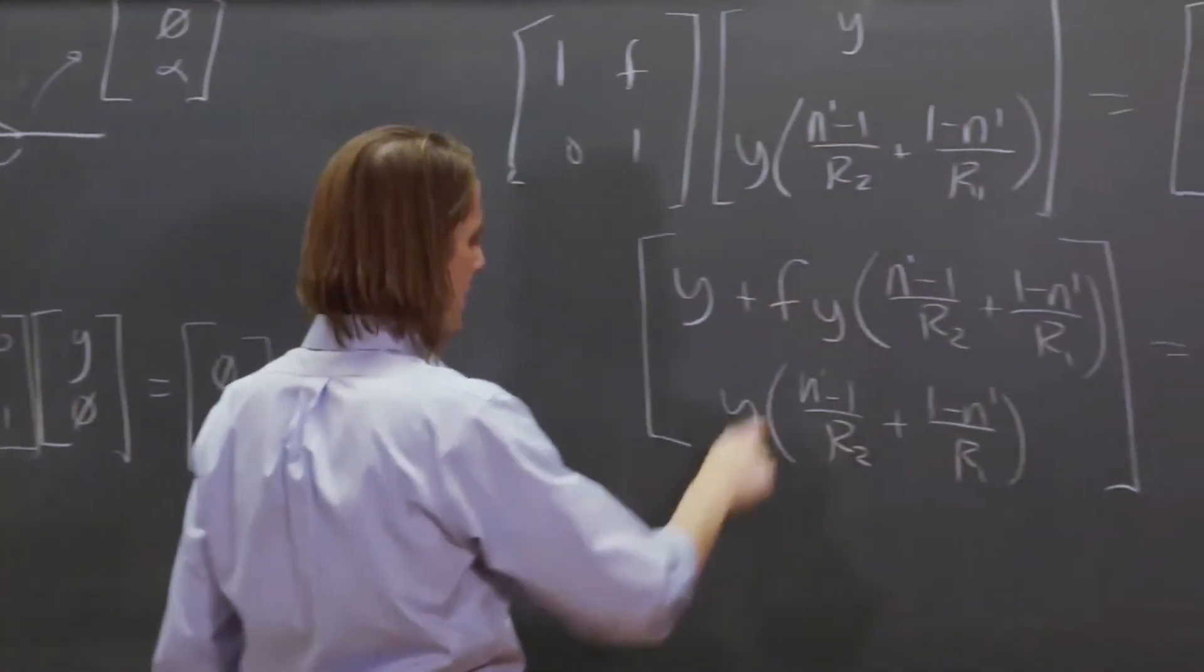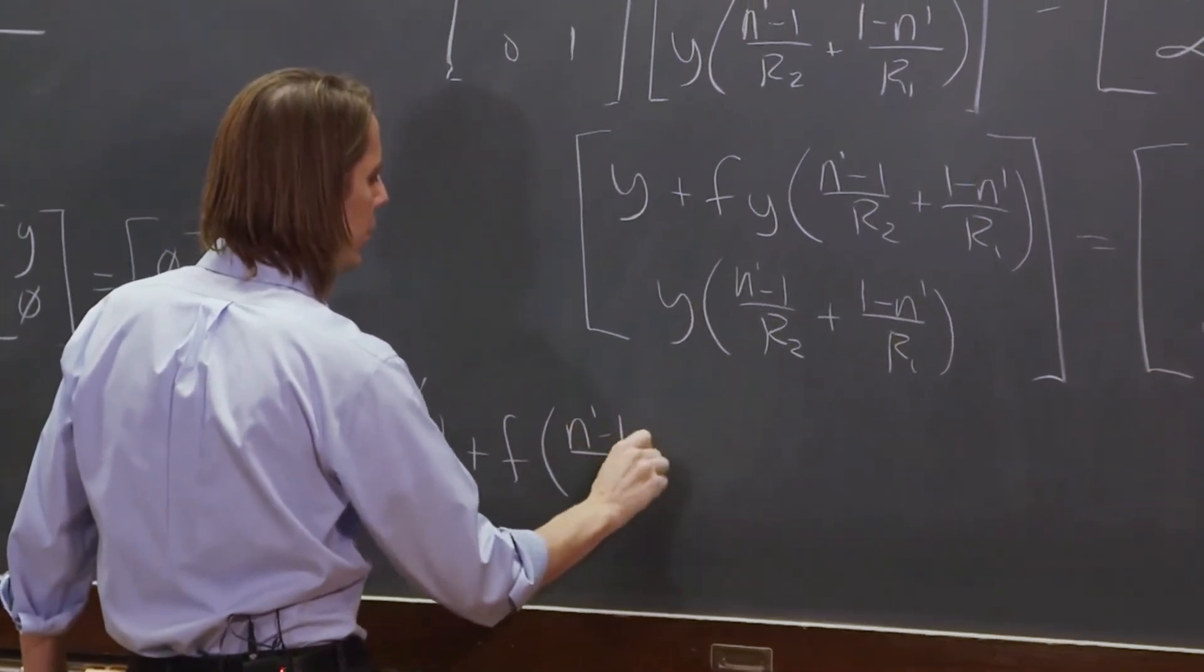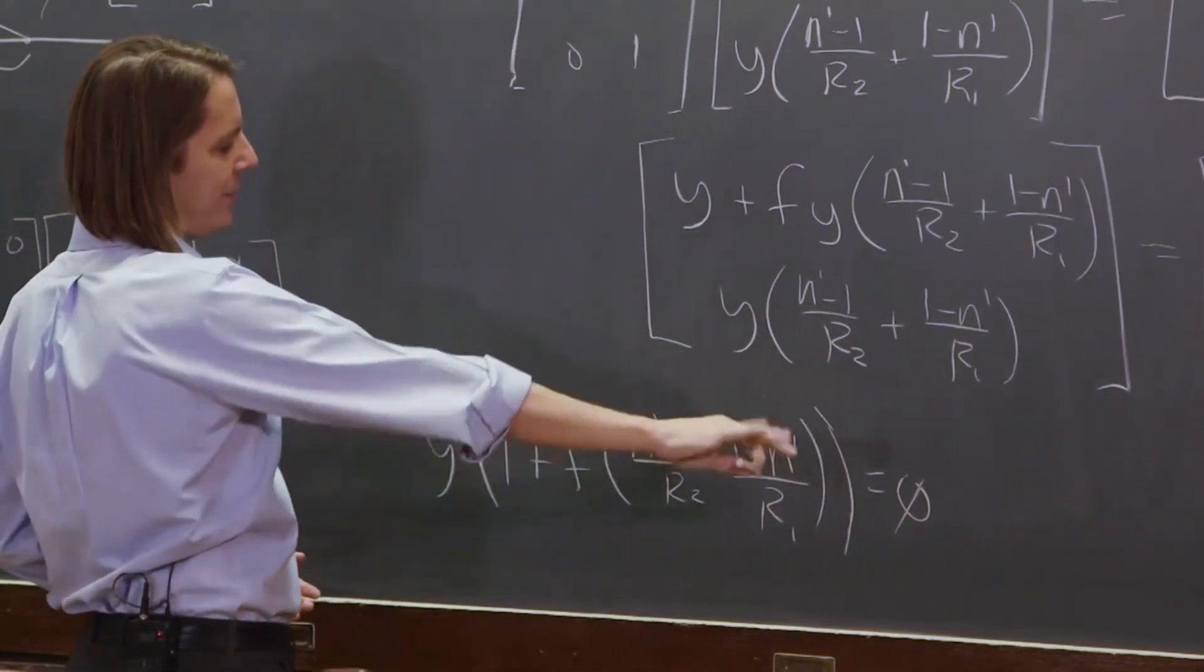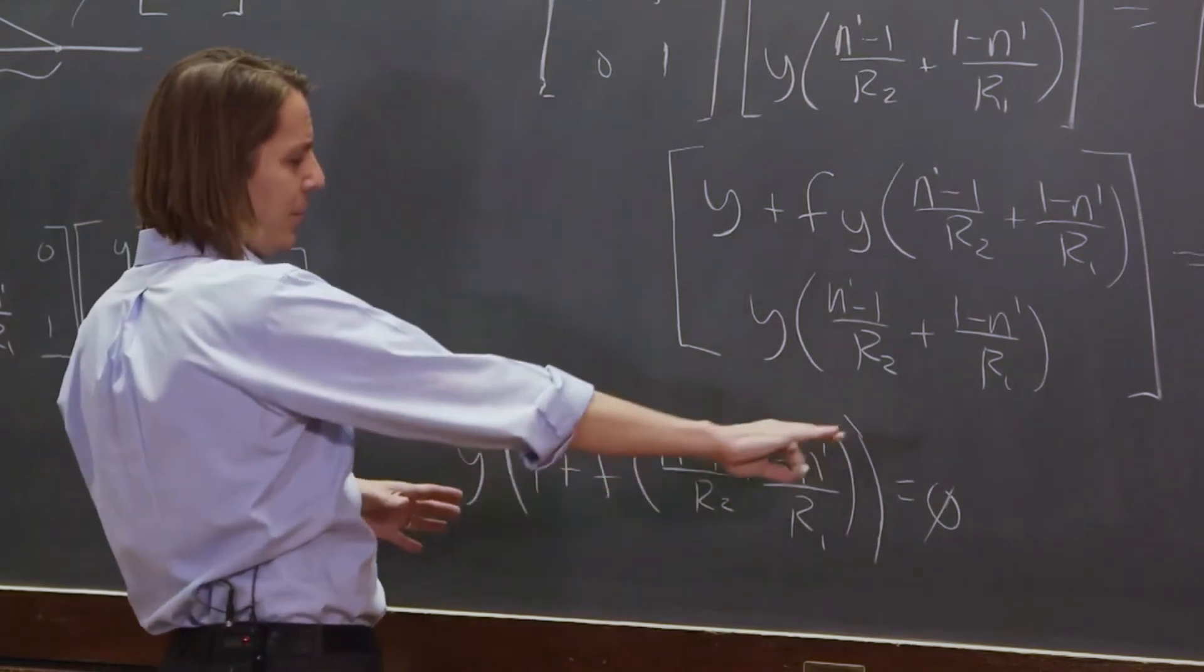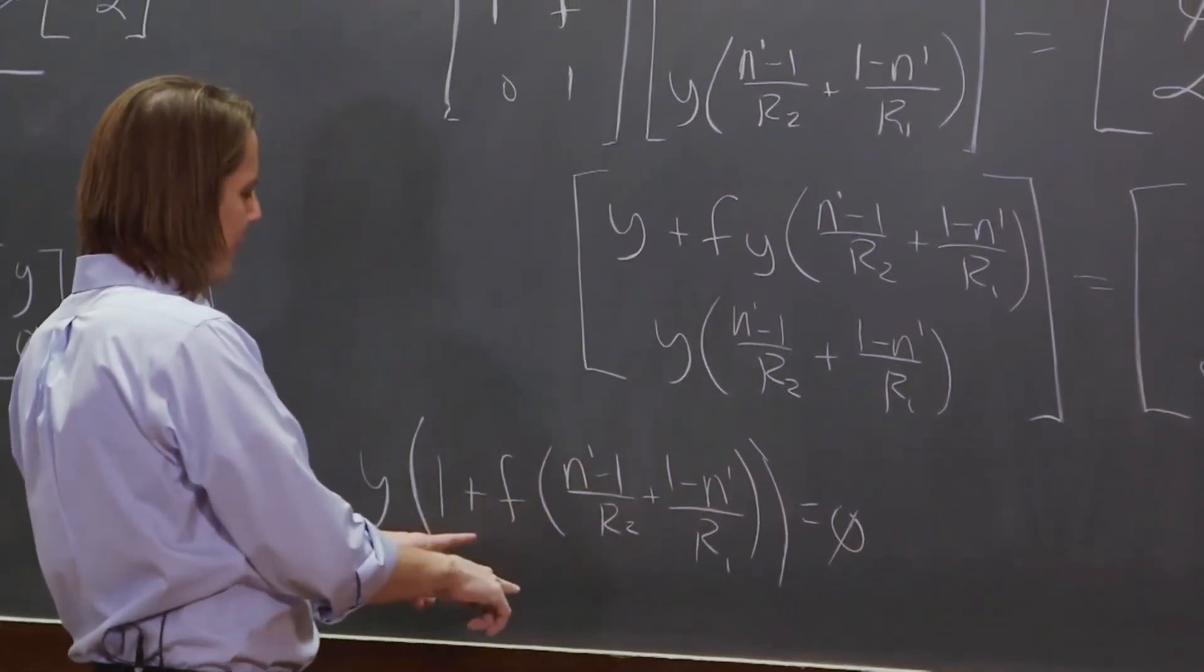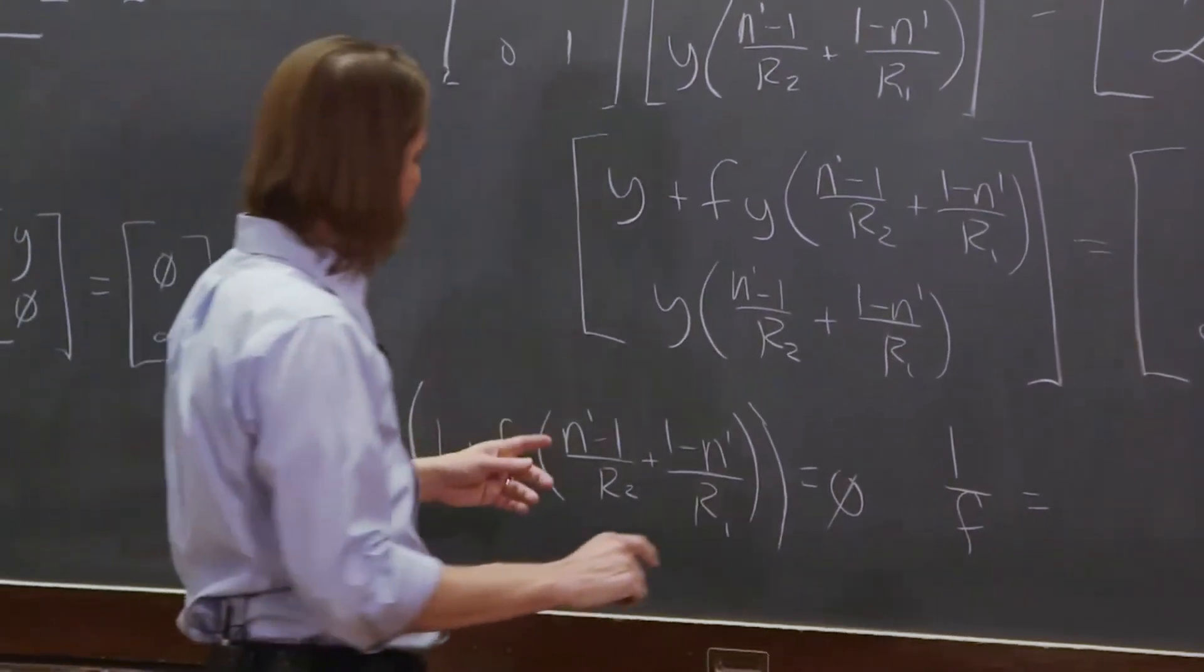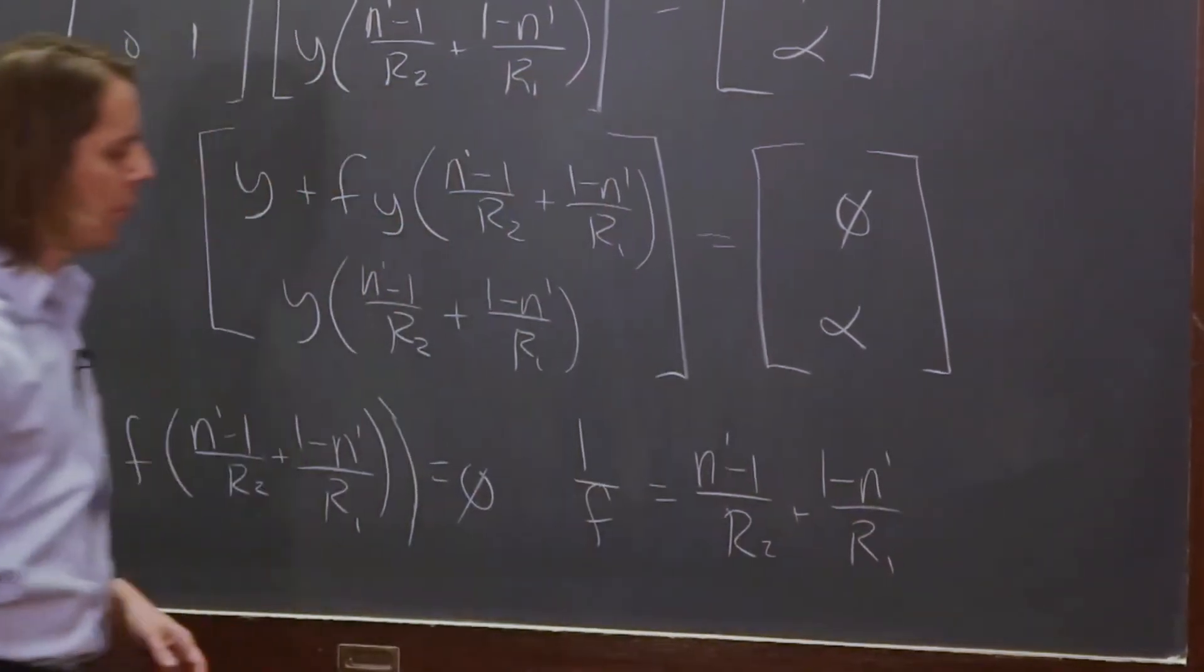We know that y times 1 plus f times n prime minus 1 over r2 plus 1 minus n prime f over r1 equals 0. We divide by y. That goes away. And then we have 1 plus f times all this equals 0. We actually want to solve for 1 over f. If this thing equals minus 1, then 1 over f is equal to this thing. So 1 over f equals n prime minus 1 over r2 plus 1 minus n prime over r1.